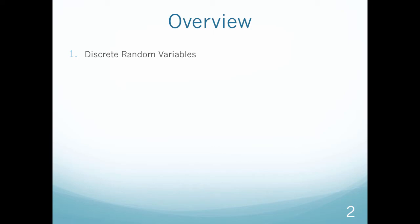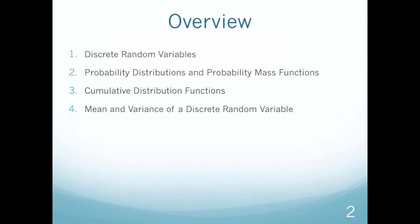As we get started, I'm going to go over what we're going to be talking about throughout this chapter. First we're going to talk about discrete random variables, then probability distributions and probability mass functions, then cumulative distribution functions, mean and variance of a discrete random variable, discrete uniform distributions, and lastly the binomial distribution.